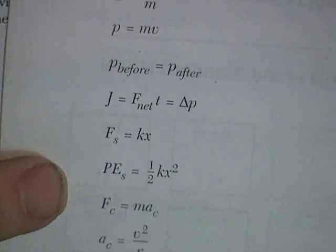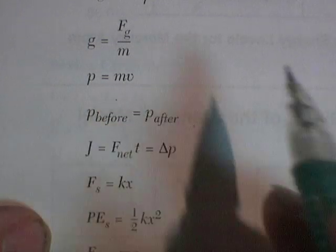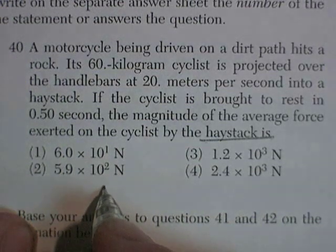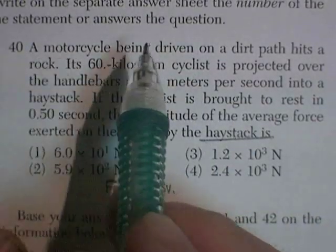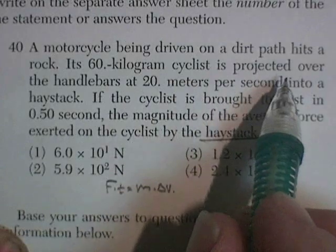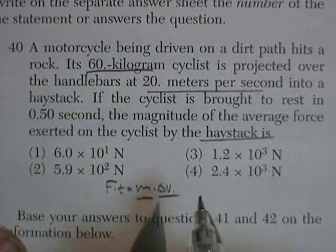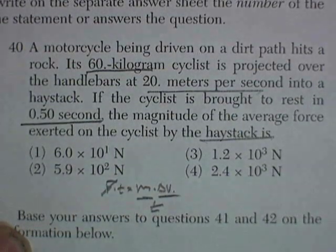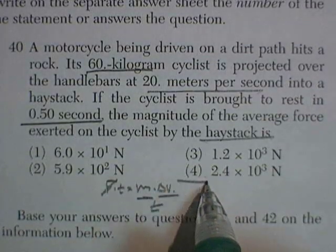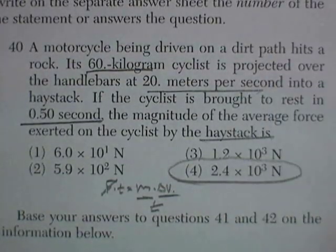It's an impulse problem. Impulse J causes a change in momentum: force times time equals mass times change in velocity. The cyclist is traveling at 20 meters per second, has a mass of 60 kilograms, and takes half a second to stop at the haystack. So force equals M delta V divided by T. Doing the math gives 2.4 times 10 to the 3 newtons.